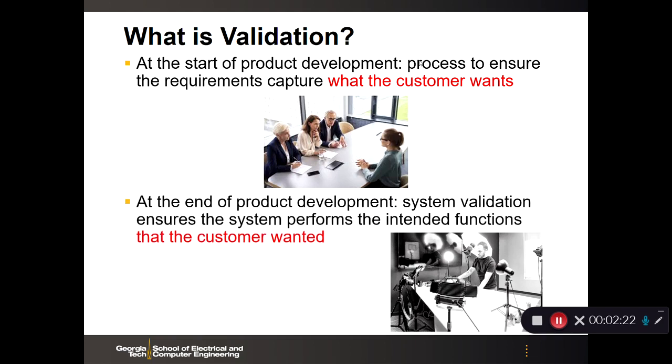Then at the end of the product development, you now have a product, and you now want to do system validation to ensure that the system that you've just finished designing and testing yourself performs the intended functions that the customer wanted. So now we have a product in the lower right, and now we're going to demonstrate it or make sure that we've met the intended functionality that the customer wanted.